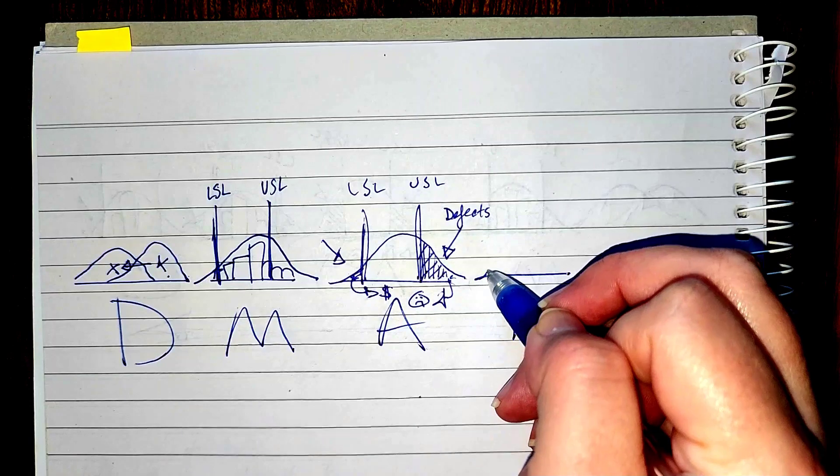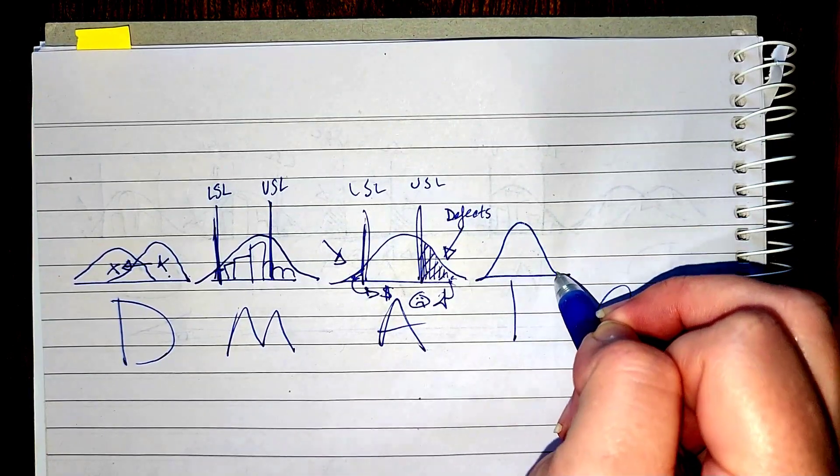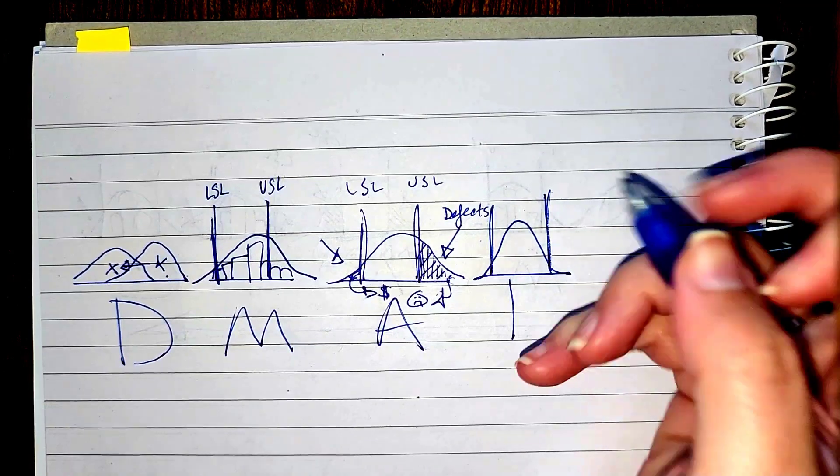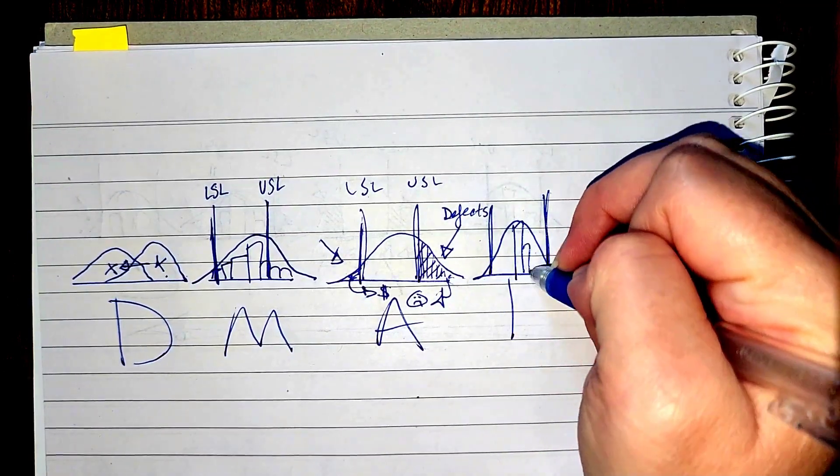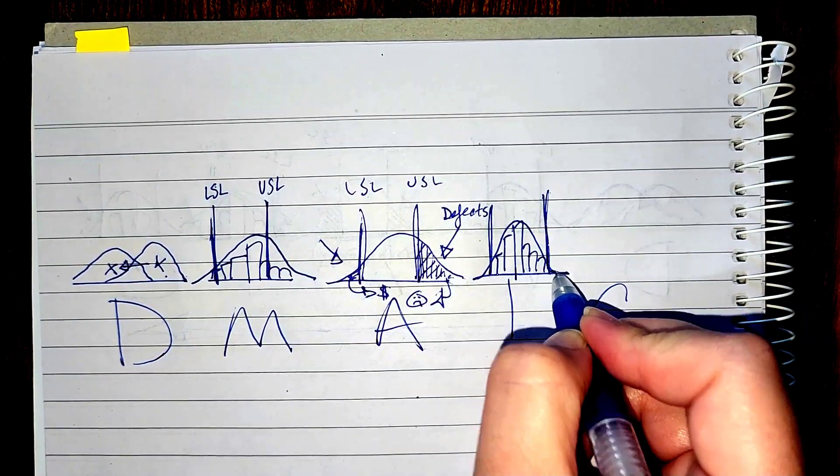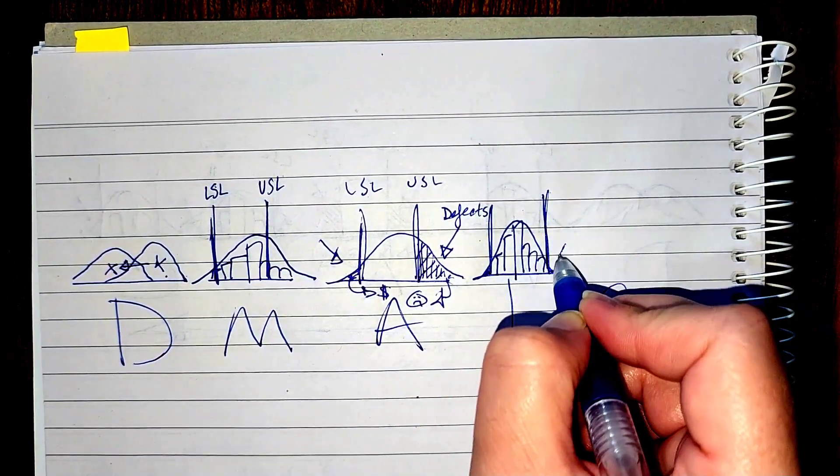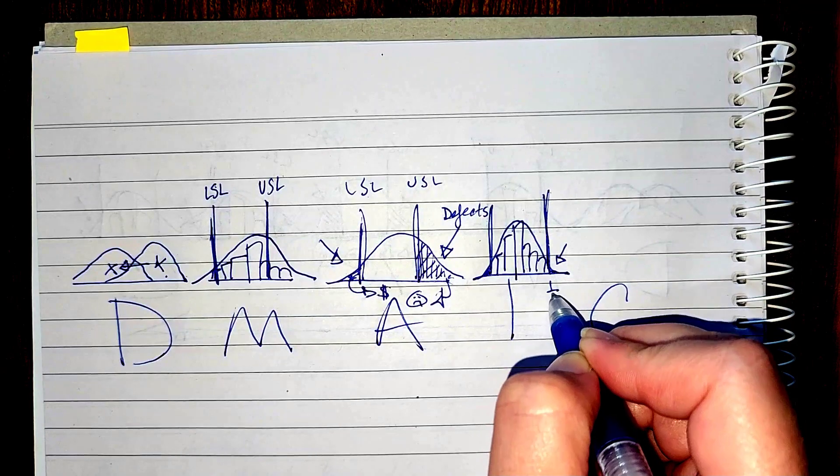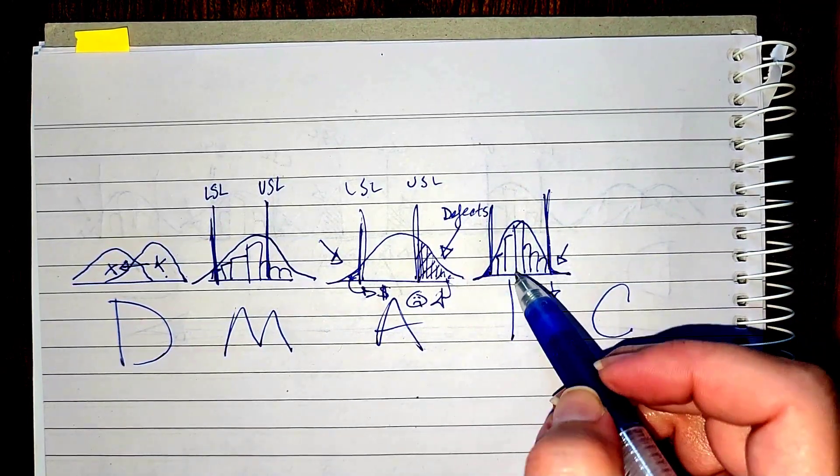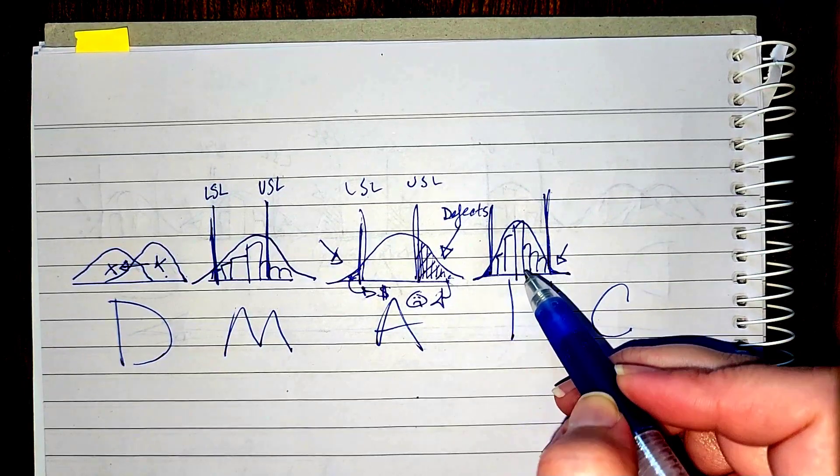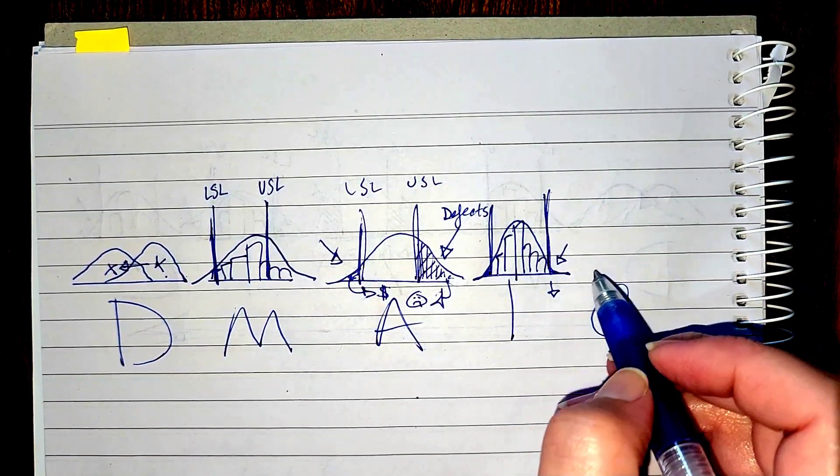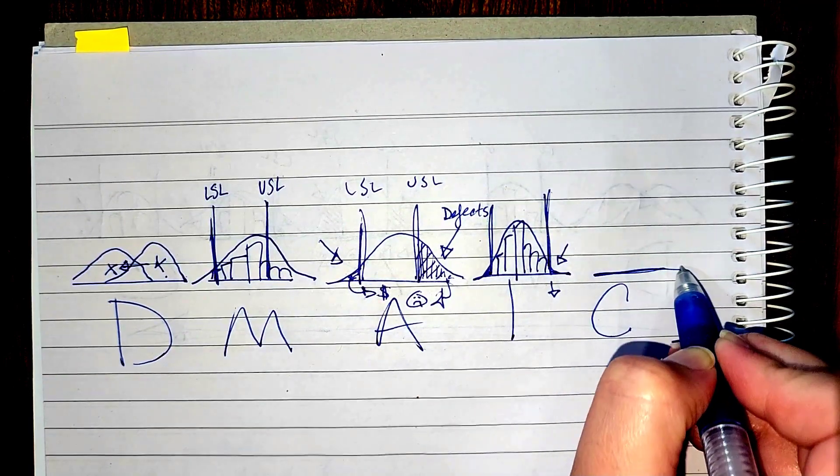And as we move into improve, what we see is we identify those improvements, we implement those improvements, and hopefully we see a change in our process so that we have fewer of these defects. You can see now those defects are really low, there's not very many of them. And that's what we want to see. Now we're confident that we are meeting or exceeding our customers expectations and then we can move over to our control phase.